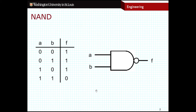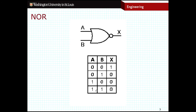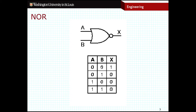The second type of gate I want to introduce is called a NOR gate. You can see from the symbol that a NOR gate looks like an OR gate with an inverter attached to the output. NOR stands for NOT OR. If you look at the truth table, it's the exact complement of an OR gate — if both inputs are low, the output is high, and for all other input combinations the output is low.